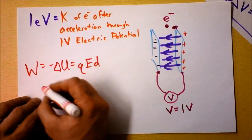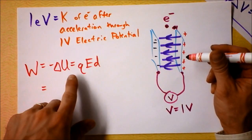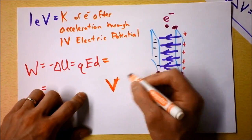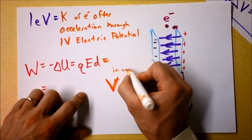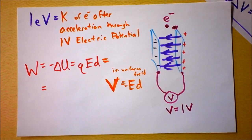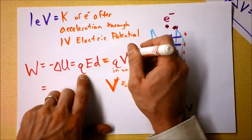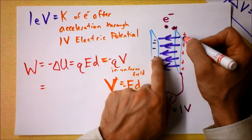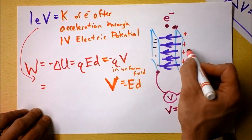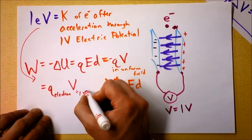The voltage between two plates in a uniform field simplifies nicely. The electric potential is simply negative E times D. So work is just charge times V. In this circumstance of one electron going from one side to the other, the work done is simply the charge on an electron times the voltage, which is one volt — giving 1.602 × 10⁻¹⁹ coulomb-volts.